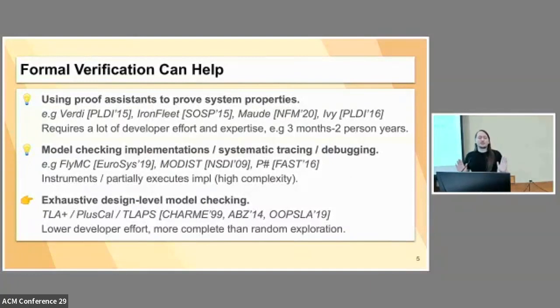Formal verification can help us with this. You can use proof assistance to prove various system properties. It takes a fair amount of effort and expertise, months to years to get this right, but there has been a reasonable amount of success on a variety of domains. On the other hand, if you don't want to write a lot of math, you can also model check your implementation. Do various kinds of systematic tracing and debugging. Essentially, this family of systems is going to take your system and try to partially execute it and explore various behaviors. Because it's a real full implementation, it's going to have a fair amount of computational complexity to it. But with some heuristics, can be effective.